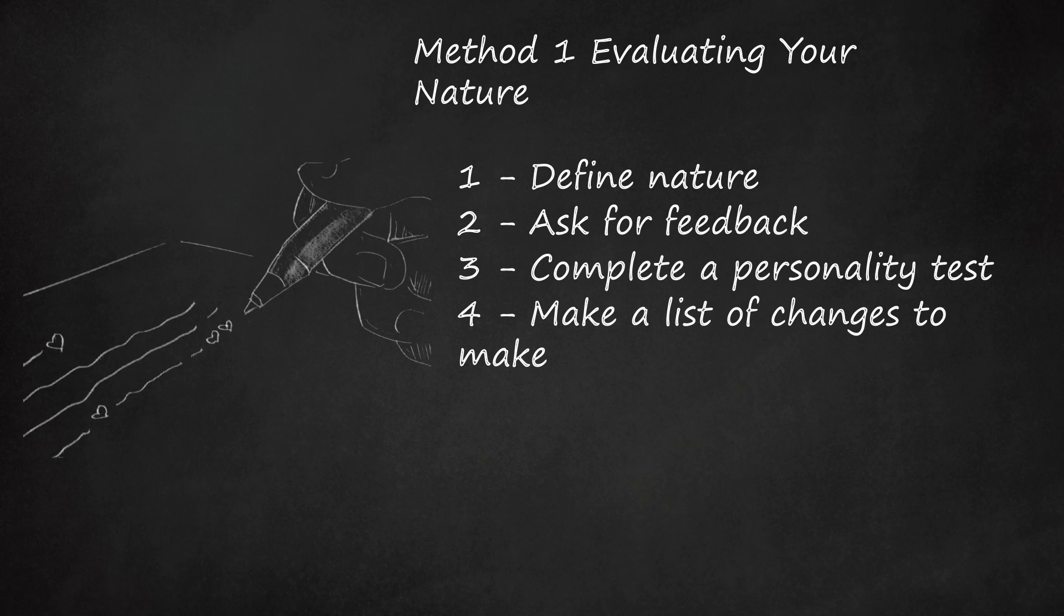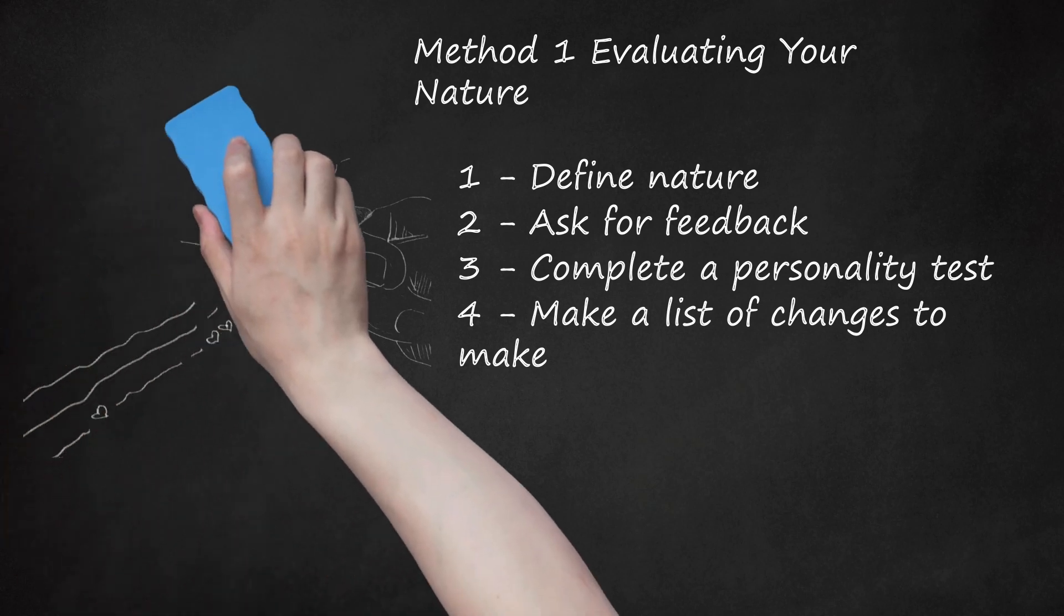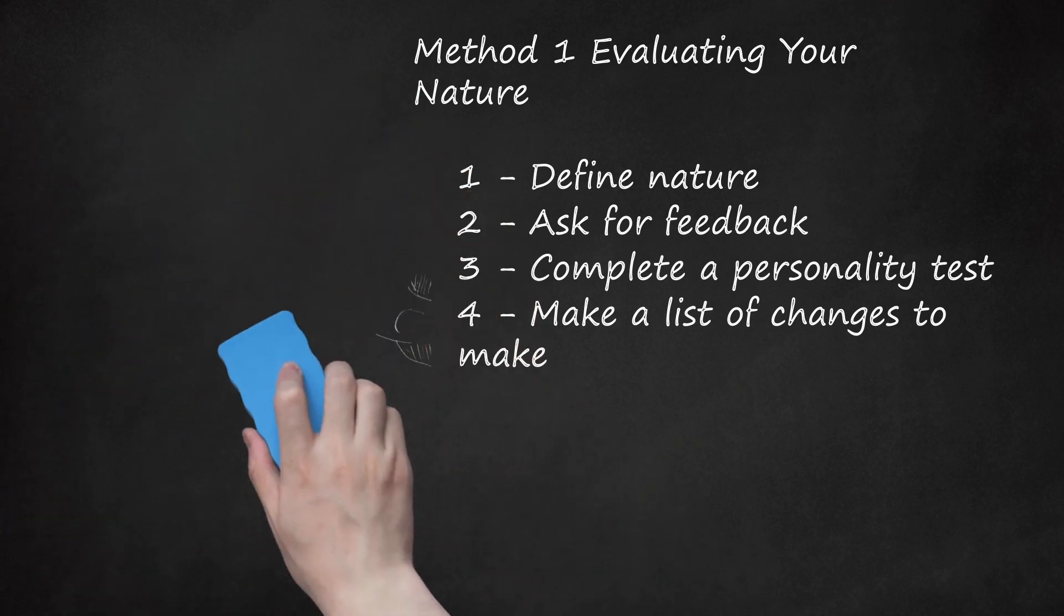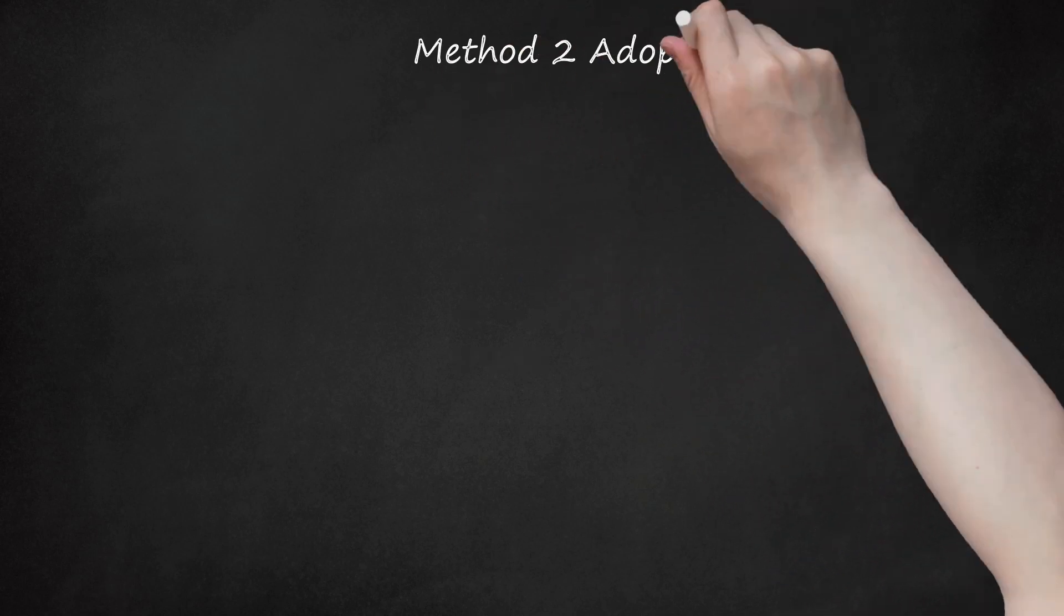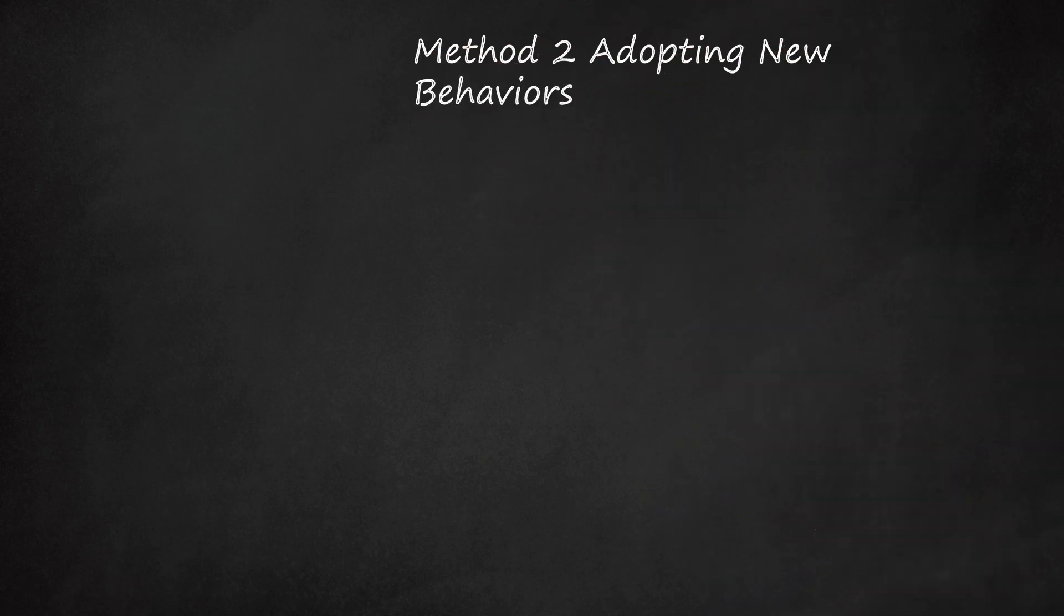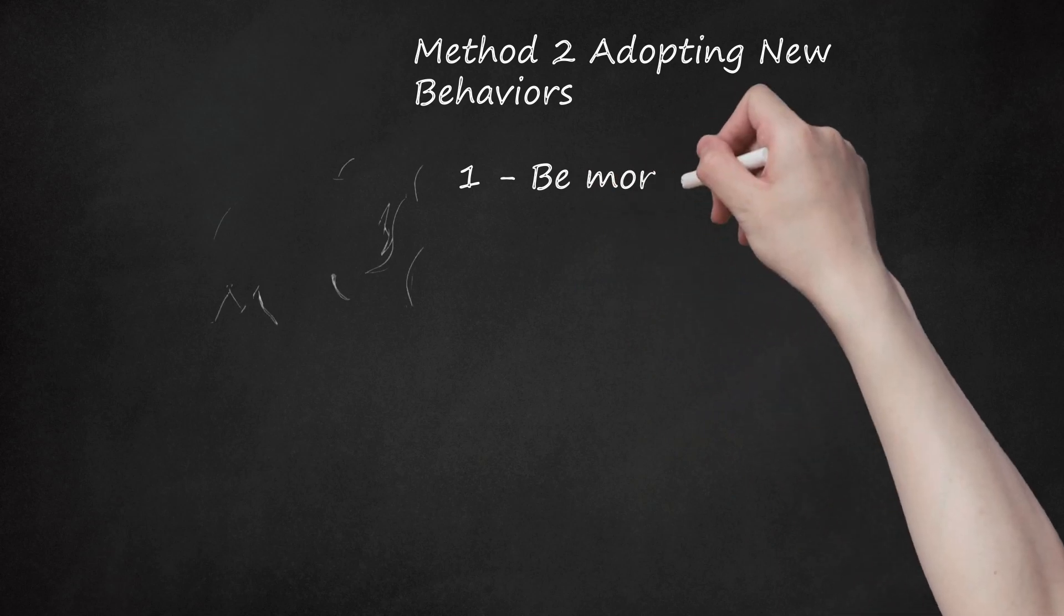Journal about your experiences in trying to make a positive change in yourself. Describe your ideal you, including qualities you possess and how others would view you and treat you. Write at least three good things that happened each day as a result of changing your nature. Method 2: Adopting New Behaviors. Be More Spiritual.